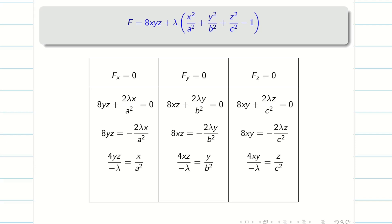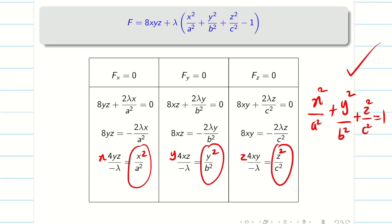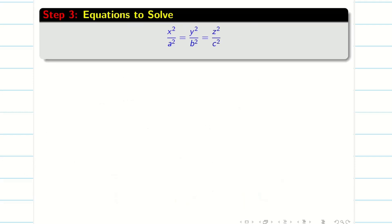In step 3, instead of solving directly, we notice a pattern. The constraint equation 2 contains x²/a², y²/b², z²/c². If we multiply the three partial derivative equations by x, y, and z respectively on both sides, the left-hand sides all become 4xyz/(−λ). Since all left-hand sides are equal, we can equate the right-hand sides, giving us the relation directly: x²/a² = y²/b² = z²/c².